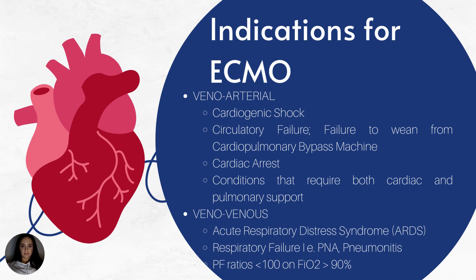For VV ECMO, it is purely for lung support. I've seen this with patients who have cystic fibrosis, ARDS, respiratory failure from pneumonia, or pneumonitis. An indicator I've seen for VV ECMO utilization is PF ratios under 100 when the patient's on an FiO2 greater than 90%.